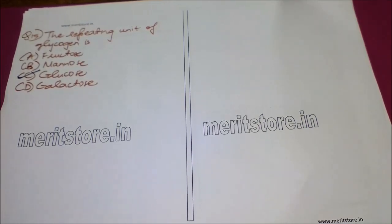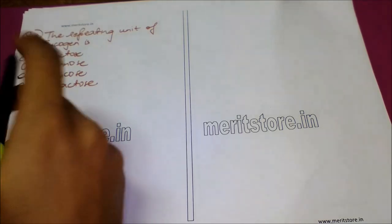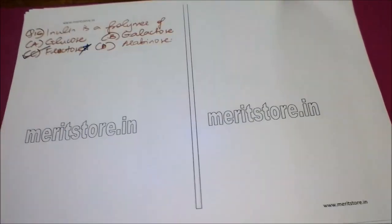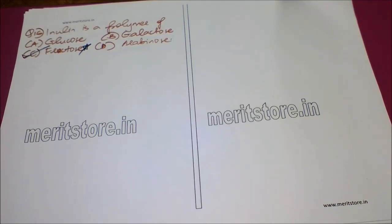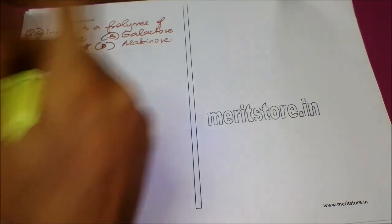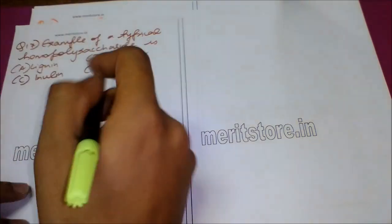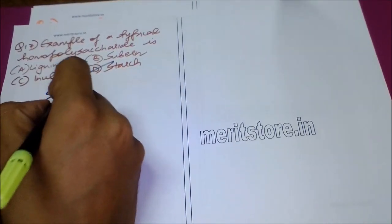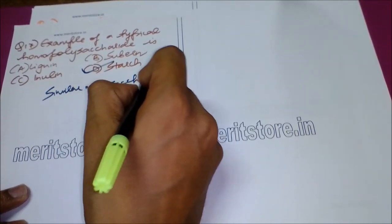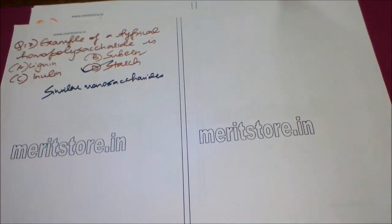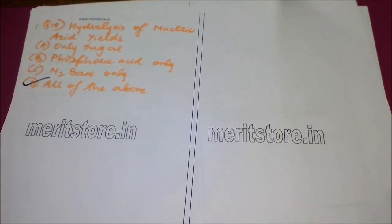The repeating unit of glycogen is — Option A: fructose, Option B: mannose, Option C: glucose, Option D: galactose. The correct answer is Option C: glucose. The next question is: an example of a typical homopolysaccharide — Option A: lignin, Option B: elunin, Option C: elunin, and Option D: starch. The correct answer is Option D: starch, which contains similar monosaccharides and is thus a typical homopolysaccharide.